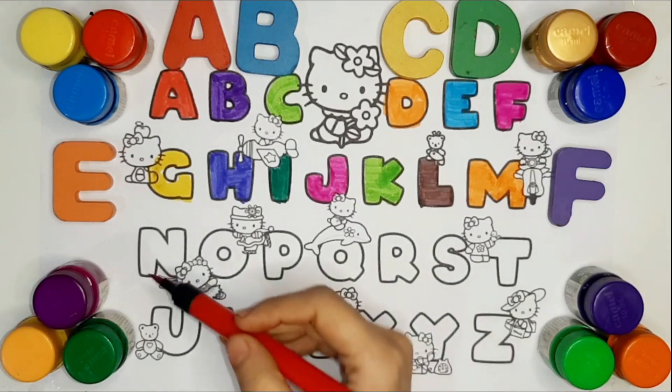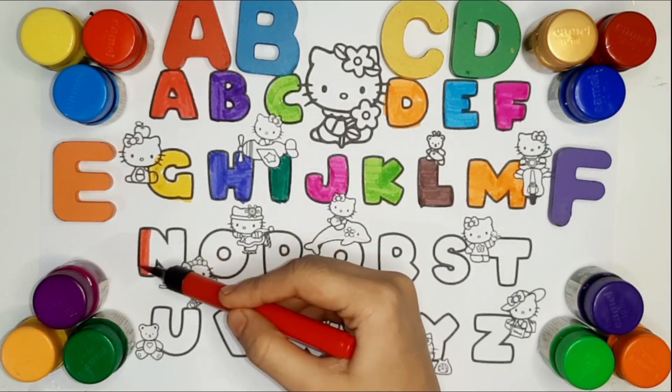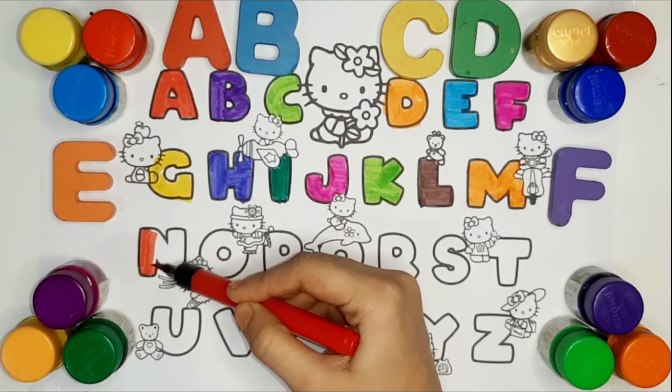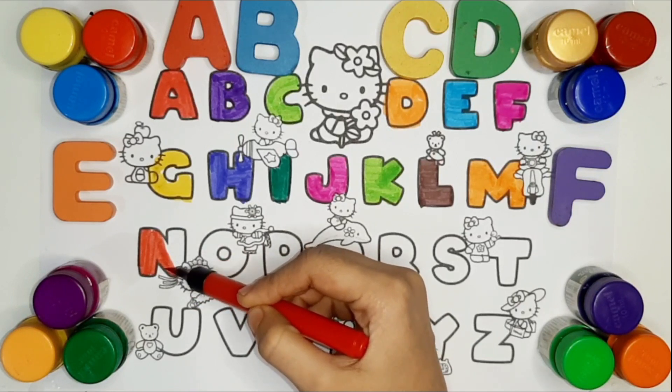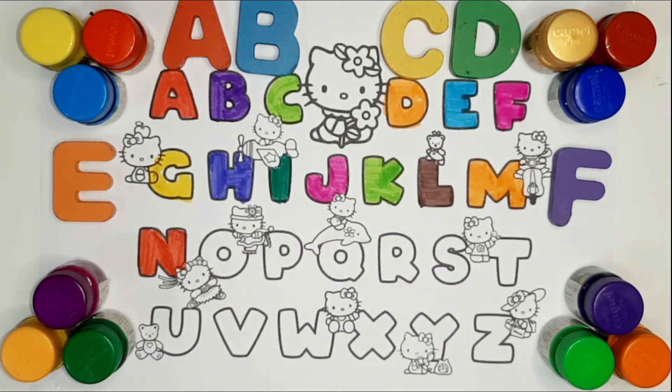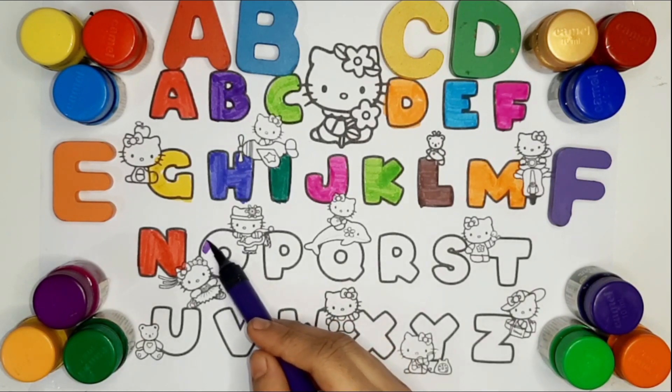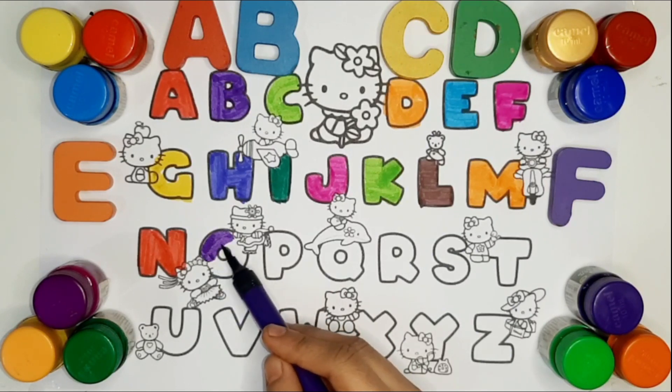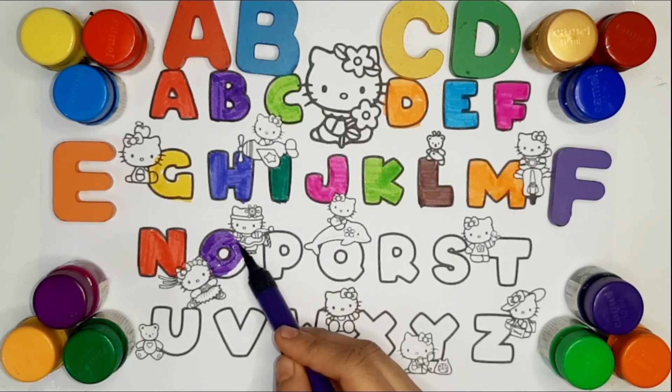Red N, N for Net. Purple O, O for Onion.